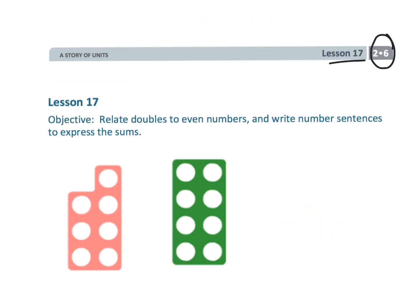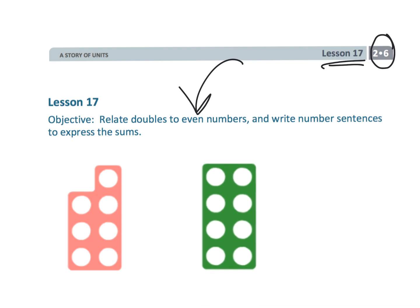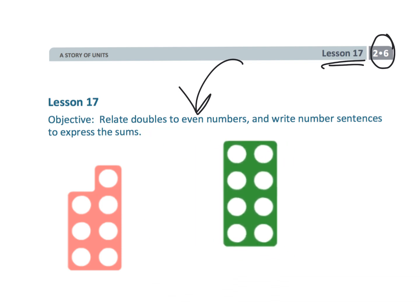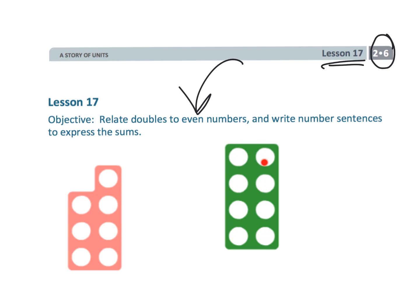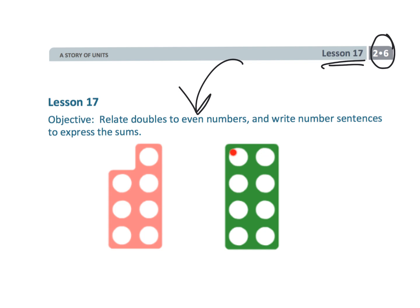That wraps up second grade module 6 lesson 17, learning about evens. In Eureka, they're thinking about evens as a double — like 4 plus 4. I like the visual of these Numicons where we can see that every circle on the left has a partner on the right, so that means it's even. Whereas here you have a gap because this circle has a partner, this one has a partner, but this one doesn't have a partner — so that makes it odd. Odd has a little knob sticking out, whereas evens are all perfect rectangles.